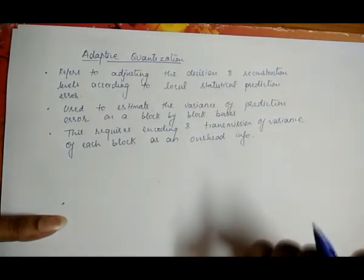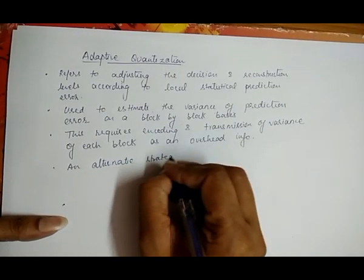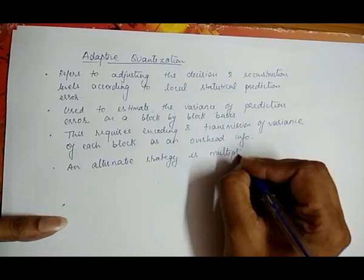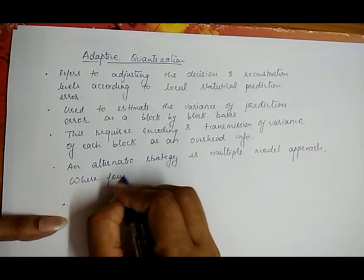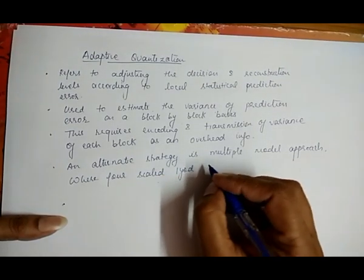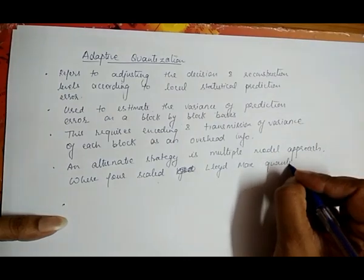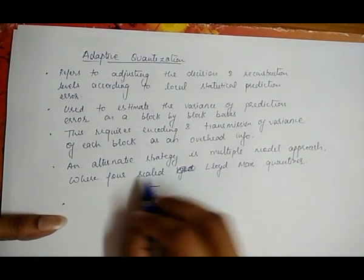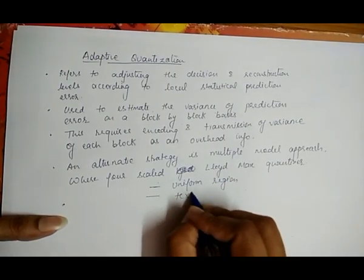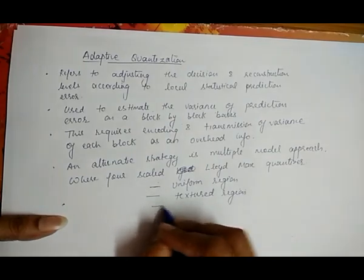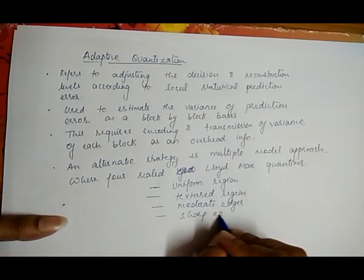We use an alternate strategy which uses a multiple model approach, where four scaled Lloyd Max quantizers are used. The four regions are: first, uniform region; second, texture region; third, moderate edges; and fourth, sharp edges — each with corresponding scale values.